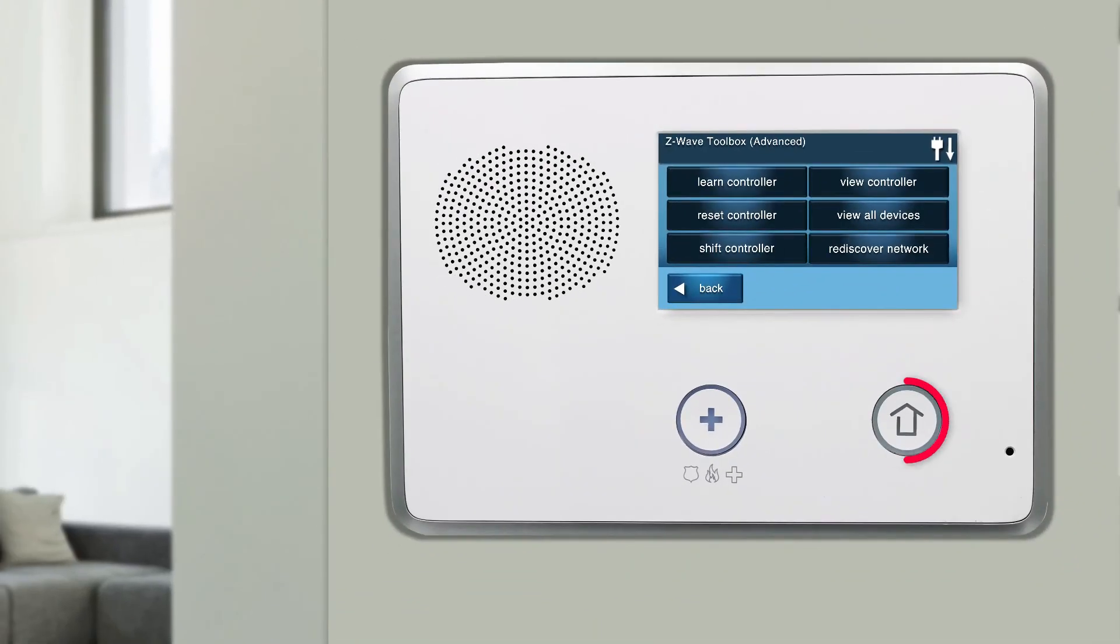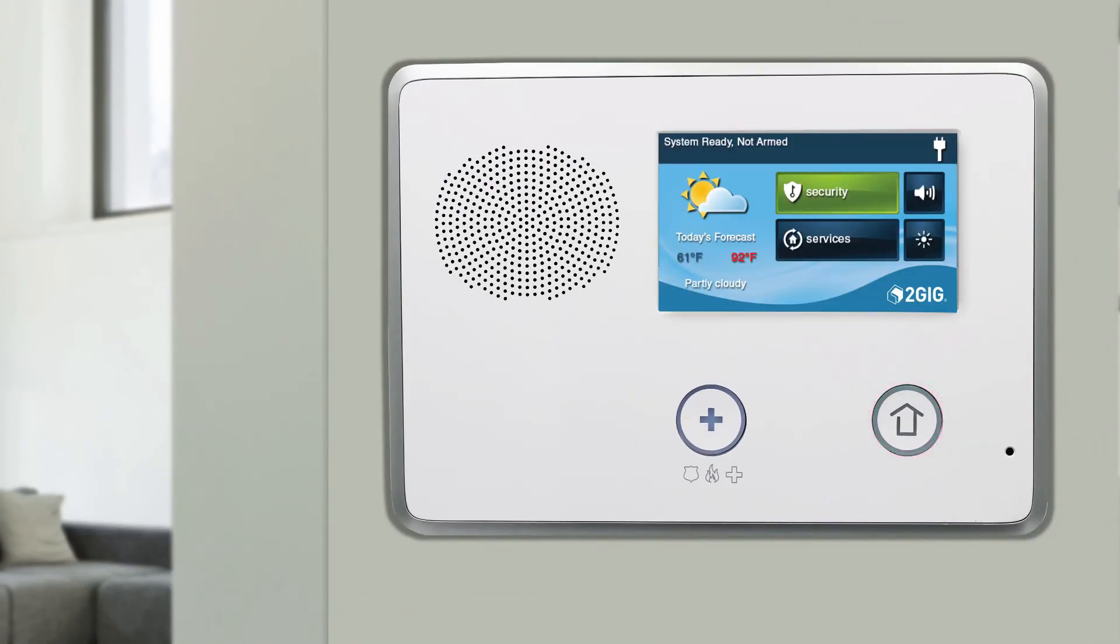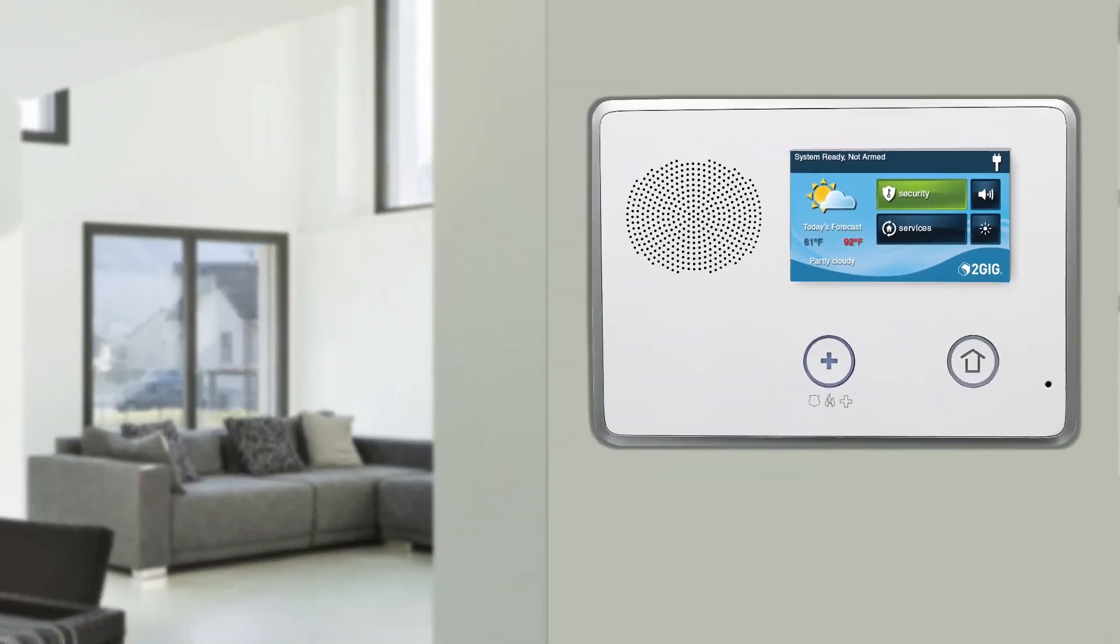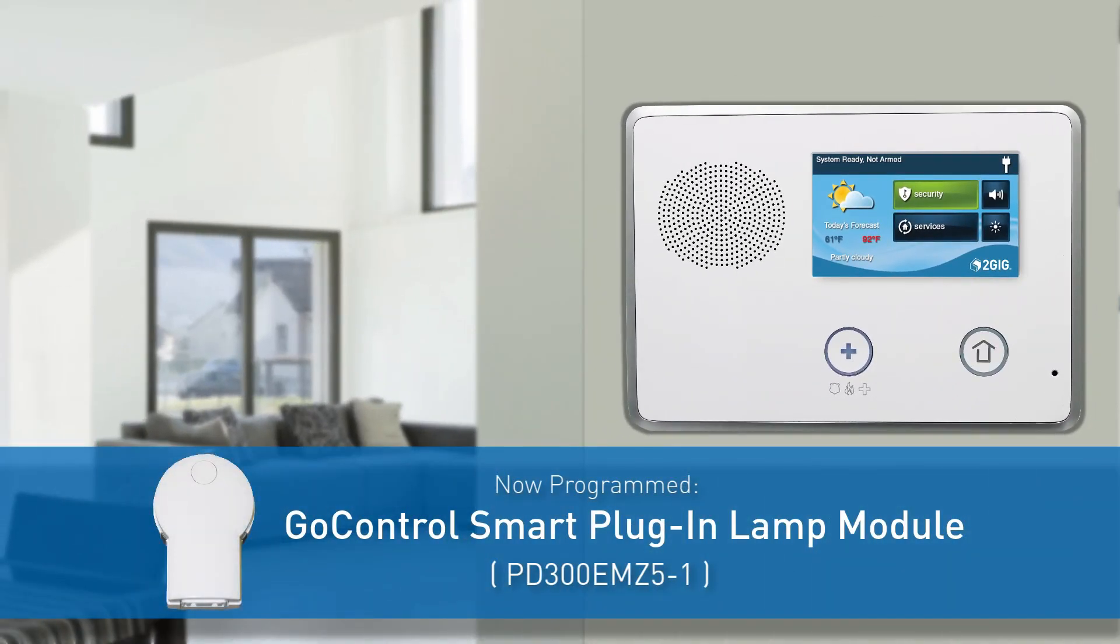Press the Home button on the panel. The GoControl Smart Plug-in Lamp Module has now been programmed into a GC2 panel.